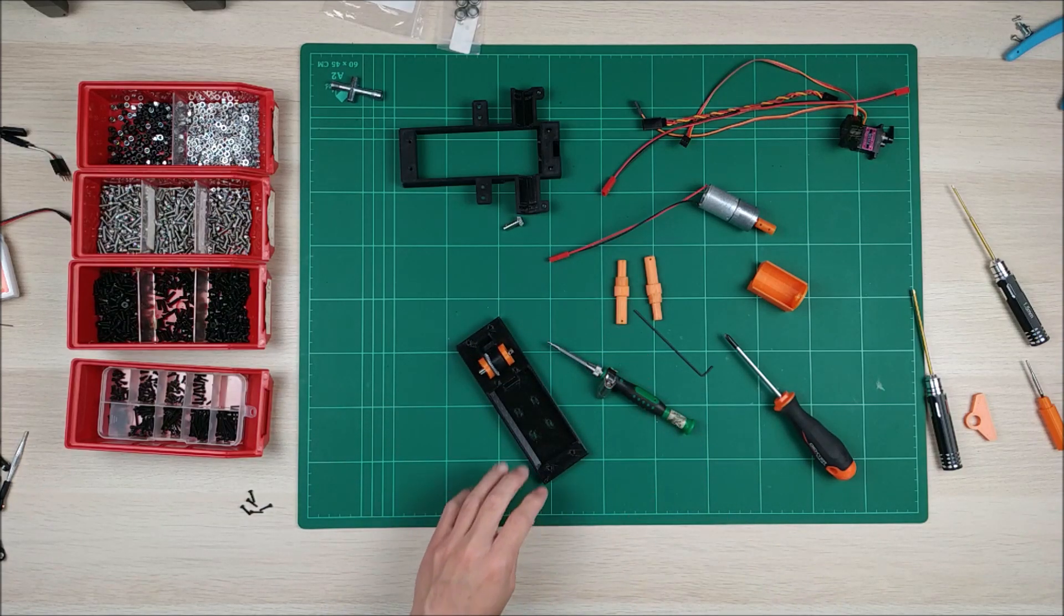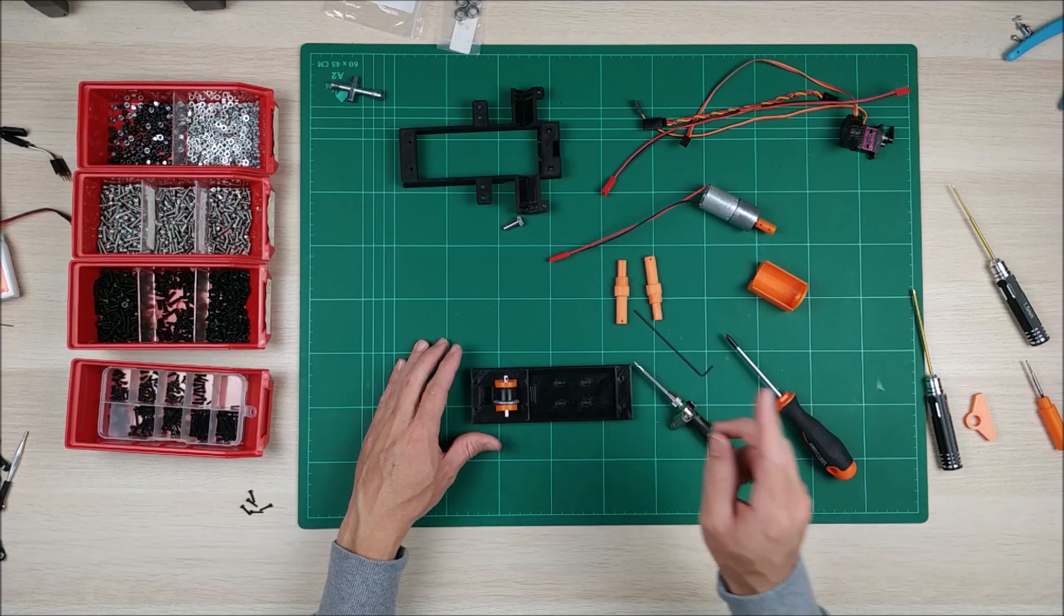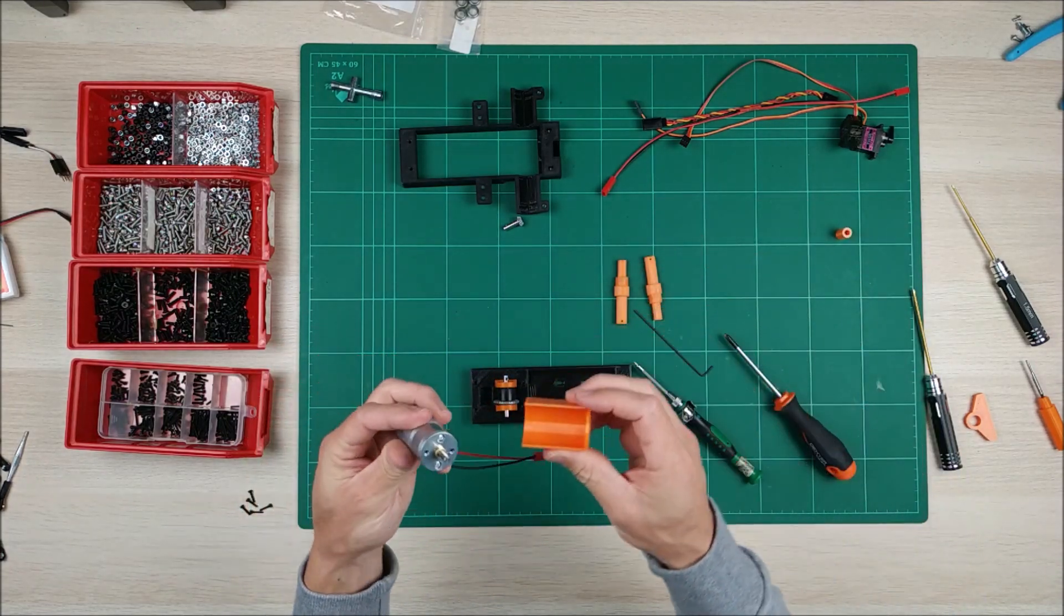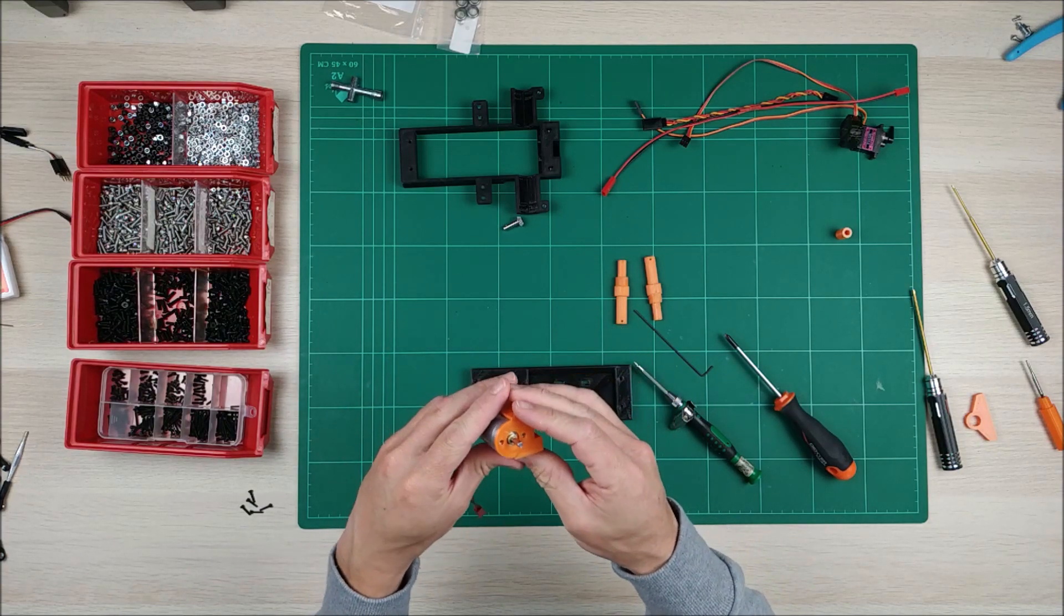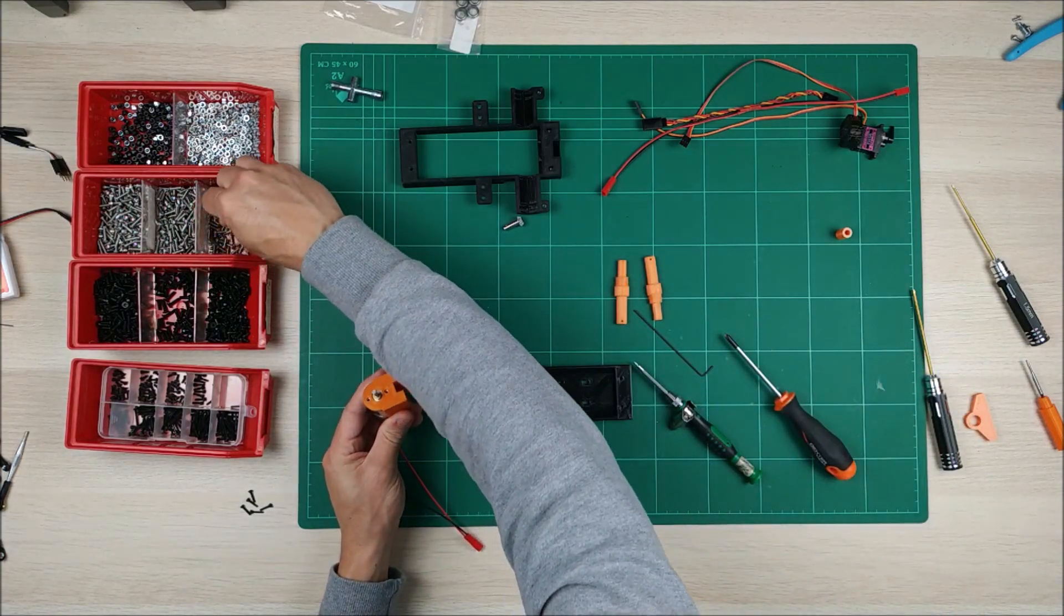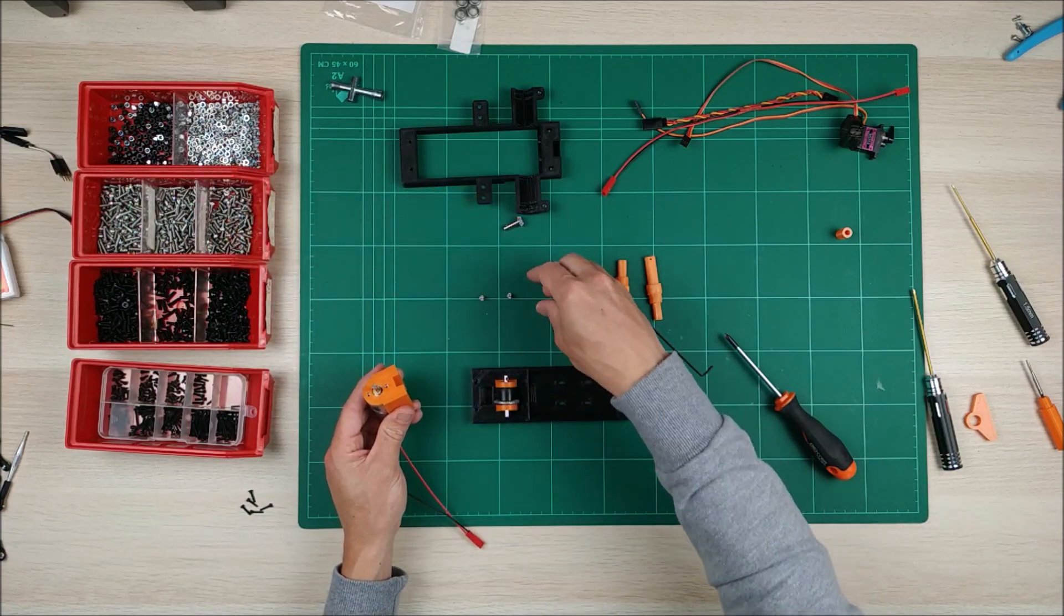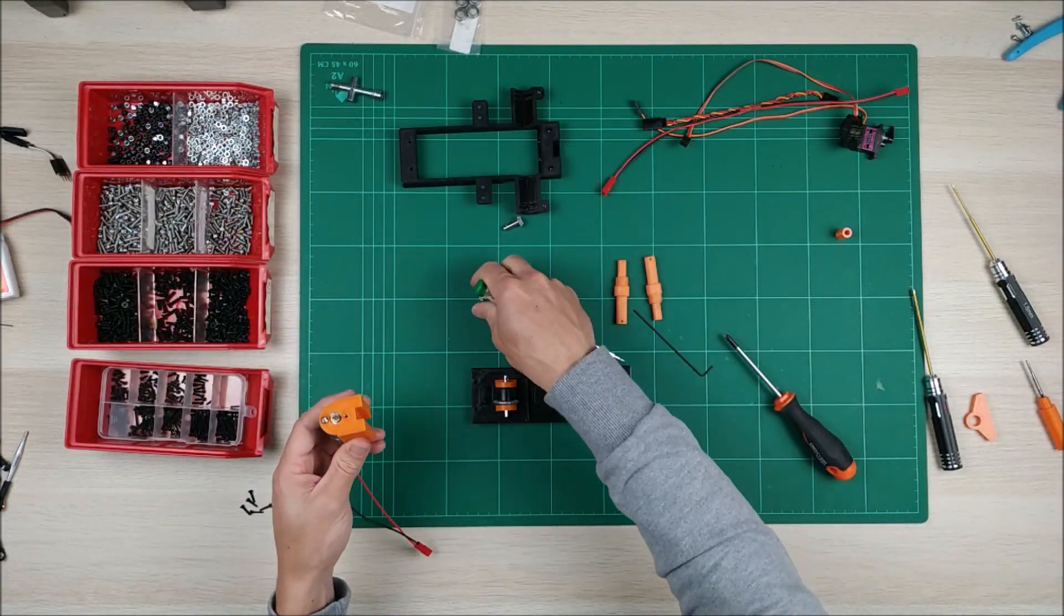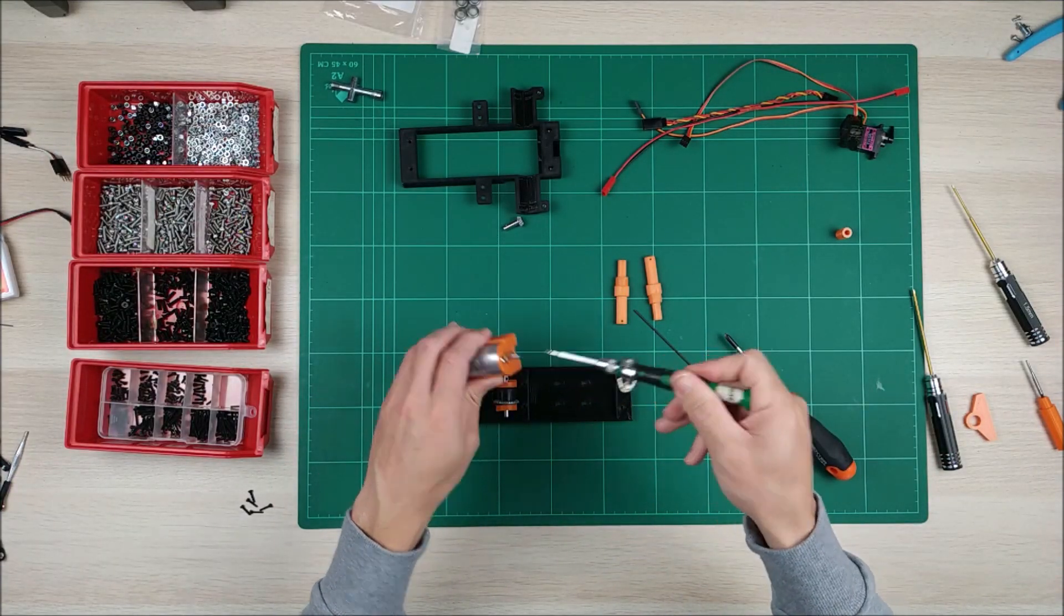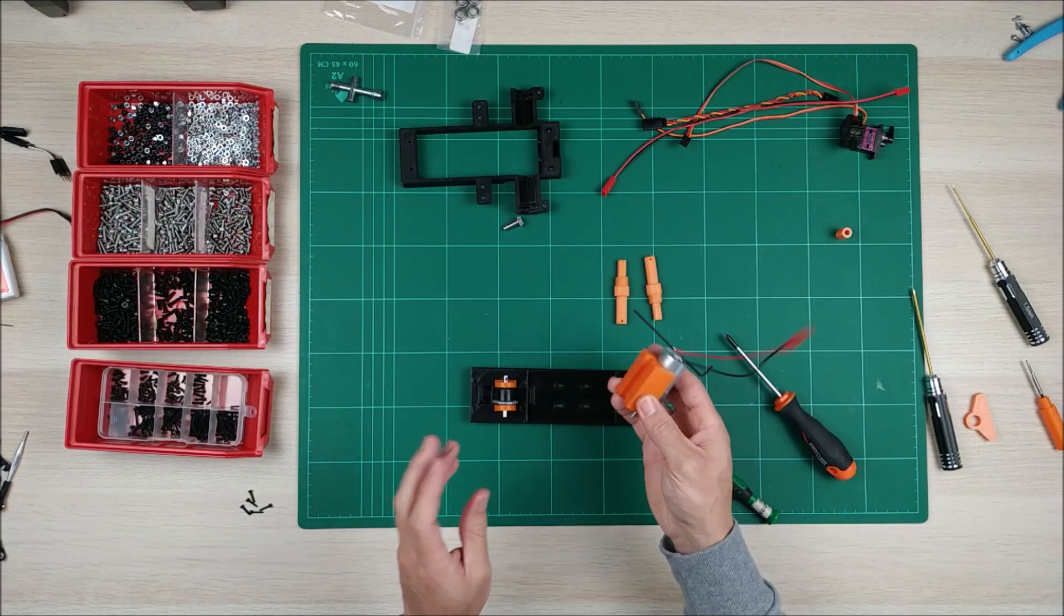Now let's do something else. We can insert this, or sorry, just assemble or mount this motor here. Use two of M3 8mm screws. Now this is going to go like this, sorry, like this.